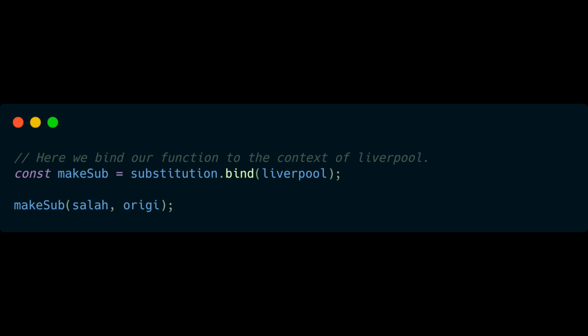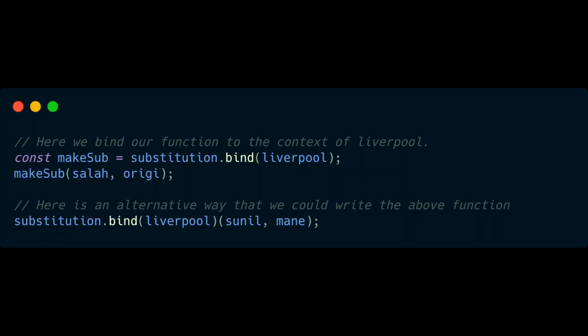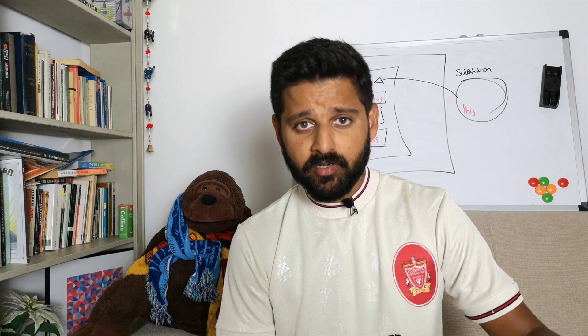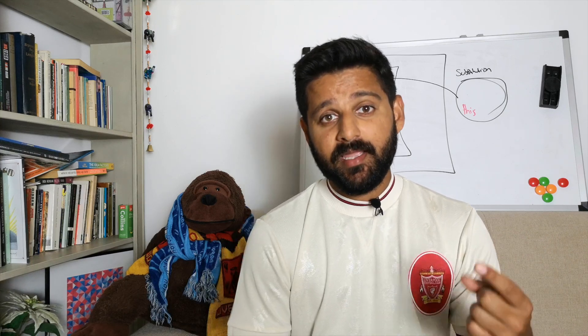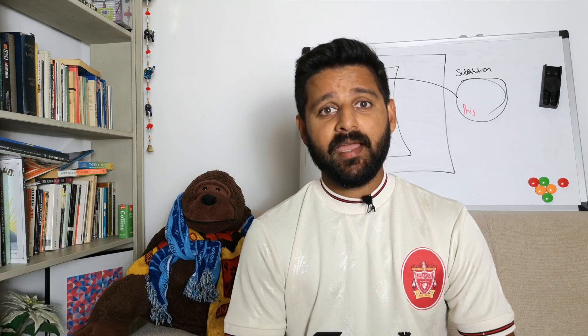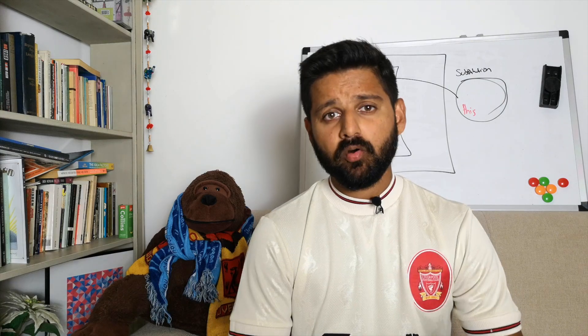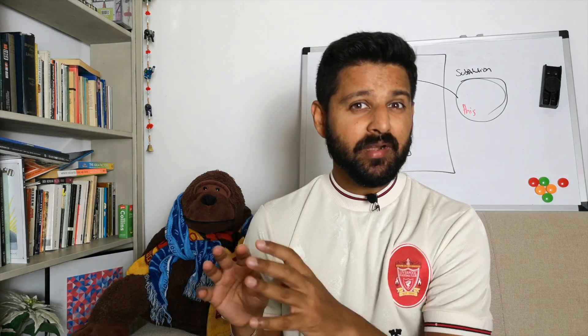That gives us the opportunity to use that function, so immediately after we can call `makeSub`, passing in the player to take out and the player to put in as parameters. There's also an alternative way to write the function which you can see on screen. However, for making substitutions which can occur several times in a game, the first approach makes more sense. A couple of things to remember about bind: it takes one parameter, it creates a copy of whatever it's bound to, and its execution is separate from its creation — you bind it and then still need to execute it.